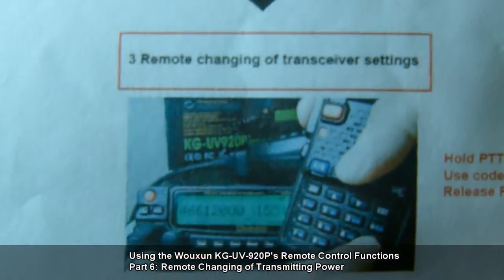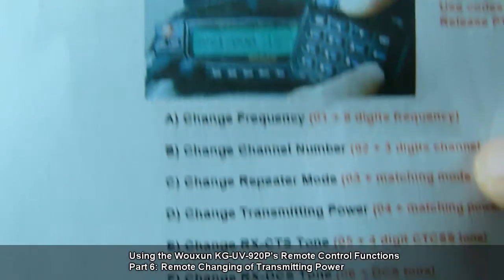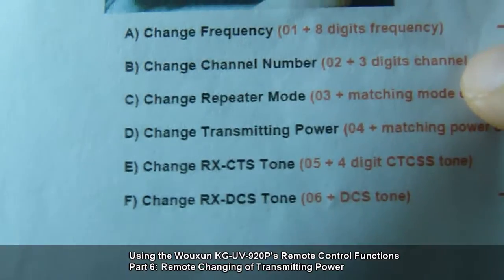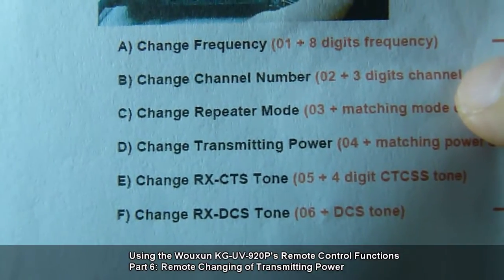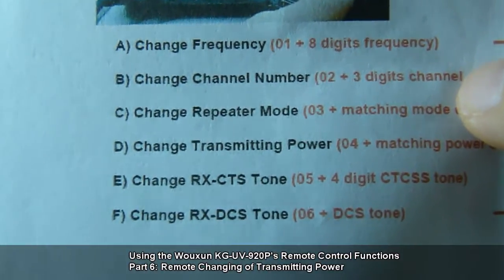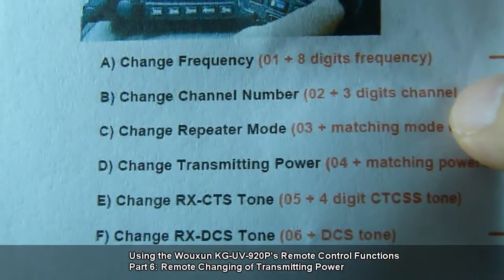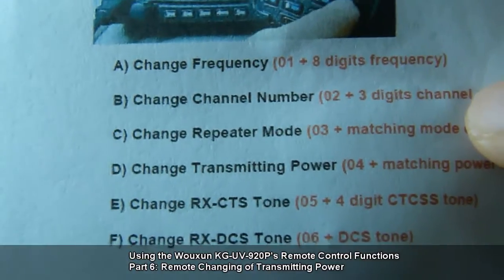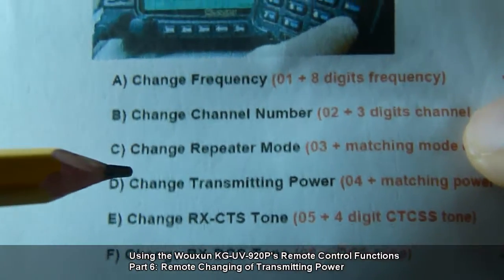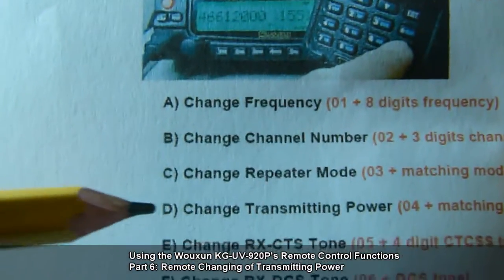There are 6 settings which you can change remotely on the KG-UV920P. You can change the frequency, the channel number, the repeater mode, the transmitting power, the RX-CTS tone, and the RX-DCS tone. For this particular video, I will be focusing on changing the transmitting power — so this would be procedure 3D.